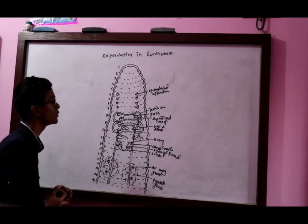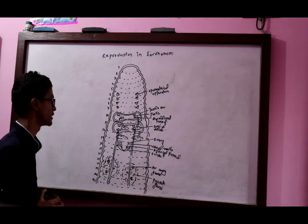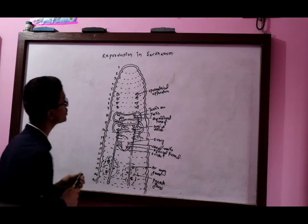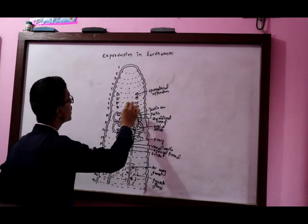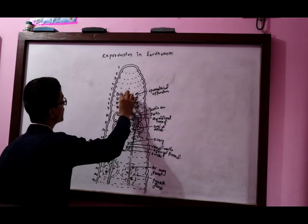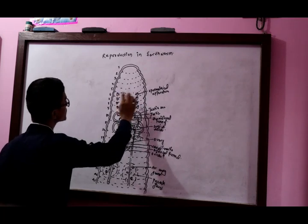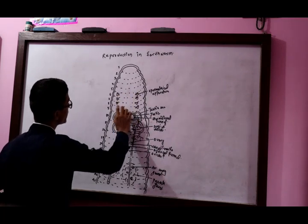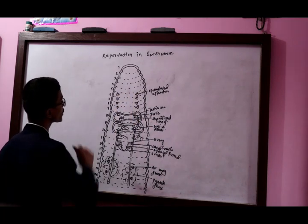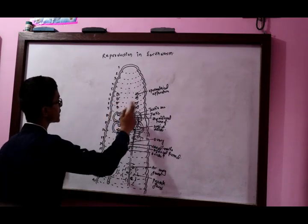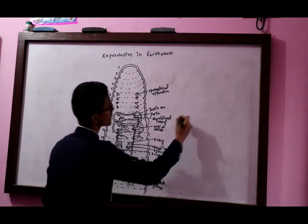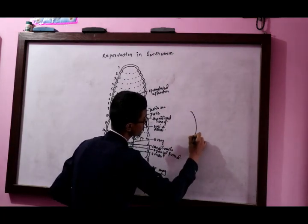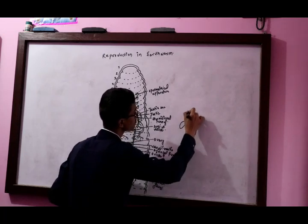Temporary attachment during copulation in earthworm. This is a female reproductive part. This is a female reproduction chain — it is a sperm or an intervention here. This is a clitellum structure. A clitellum structure — this structure is a unique structure.